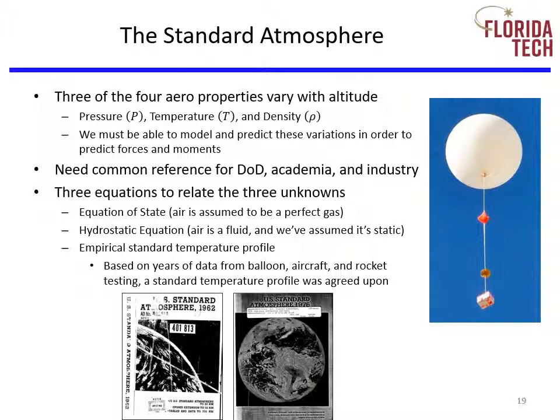The generation of the standard atmosphere is relatively simple. We have three fundamental properties to specify, so we need three equations: the equation of state for a perfect gas, the hydrostatic equation, and an empirical standard temperature profile. Based on years of data from weather balloons, aircraft, and rocket testing, a standard profile of how temperature changes within the atmosphere was agreed upon. The results are tabulated in the U.S. Standard Atmosphere. Most people use the 1962 version, since there were only slight changes in the 1976 version, allowing comparisons to programs flown in the 1960s and early 1970s — one of the golden ages of flight tests.